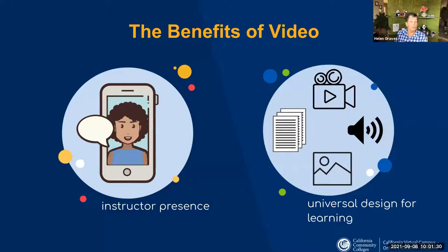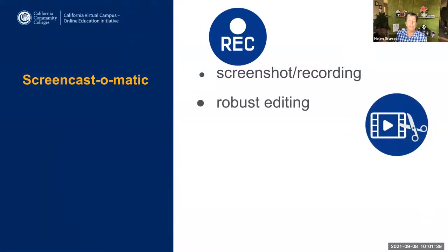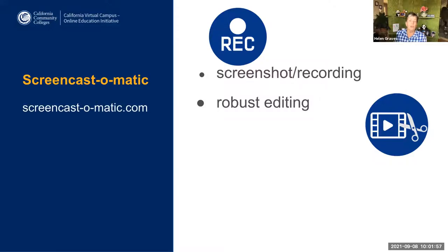Screencast-O-Matic and Studio are going to build and strengthen your course design toolbox. Screencast-O-Matic has both screenshot and recording capabilities, plus lots of simple editing features. You can record for free, but if you want the editing tools, you'll need to upgrade to the deluxe account — it's only about $20 a year. To sign up, go to Screencast-O-Matic dot com.